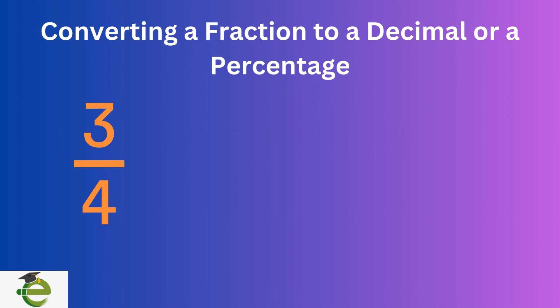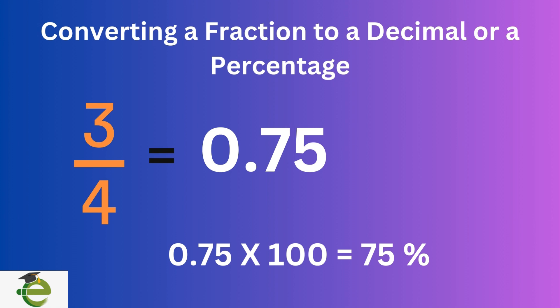To convert a fraction to a decimal, simply divide the numerator by the denominator. For example, to convert three-fourths to a decimal. The result is 0.75.